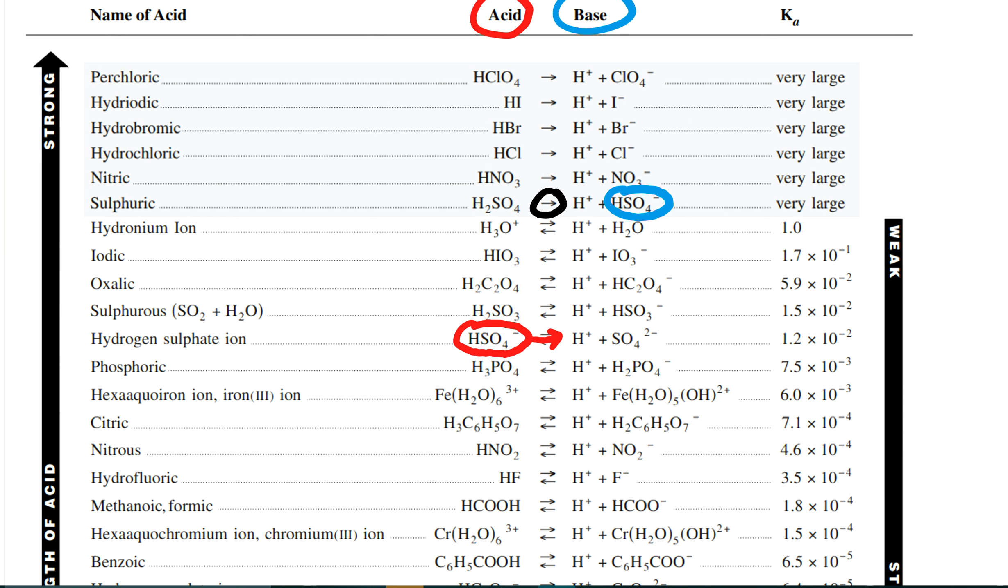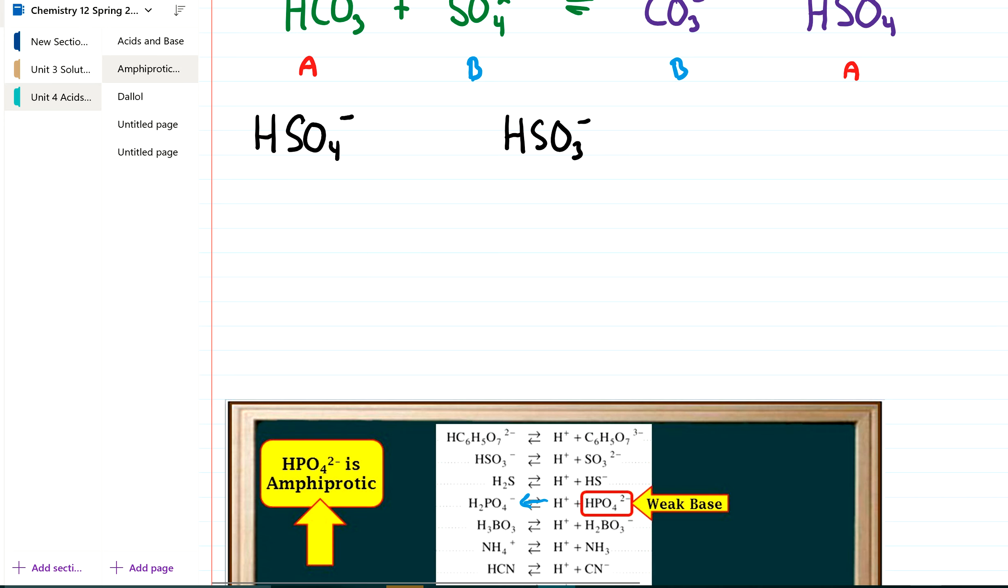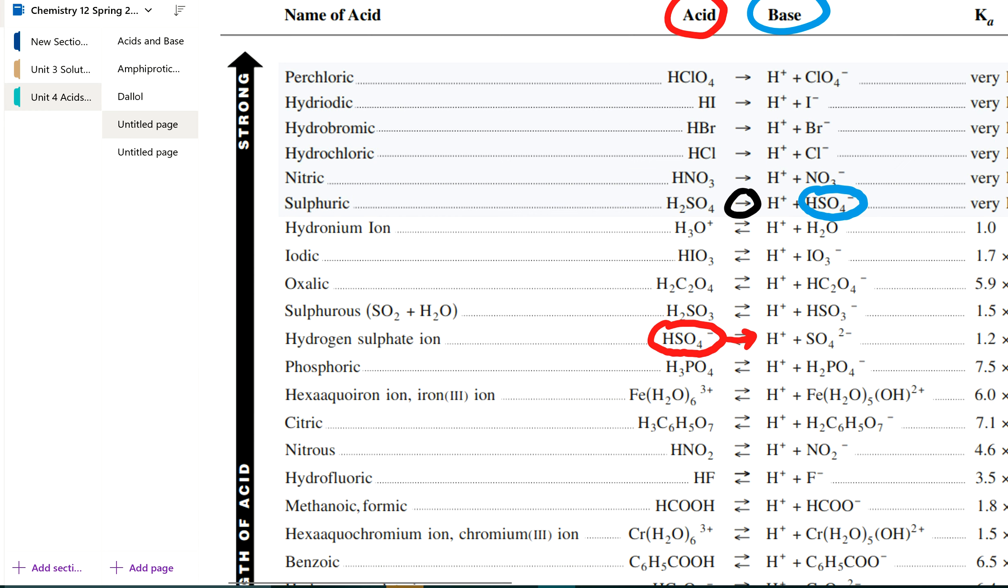So HSO4- can act, and it does act, as an acid. It gives up its proton. So in this case, the HSO4- is only an acid. It can only act as an acid. So let's take a look at HSO3- and see if that's also true for that.